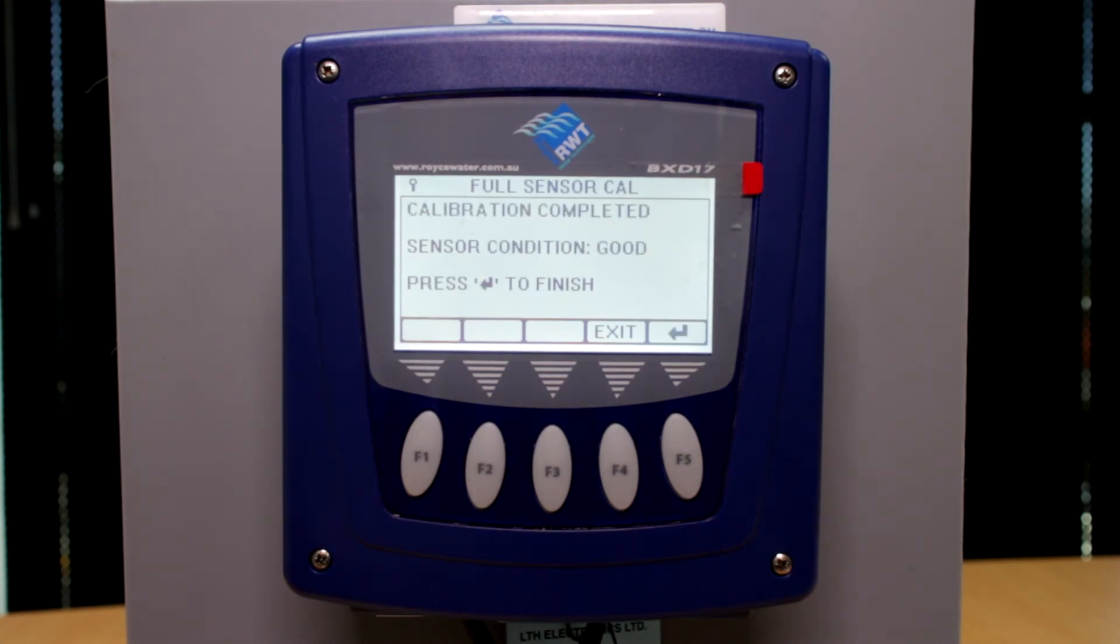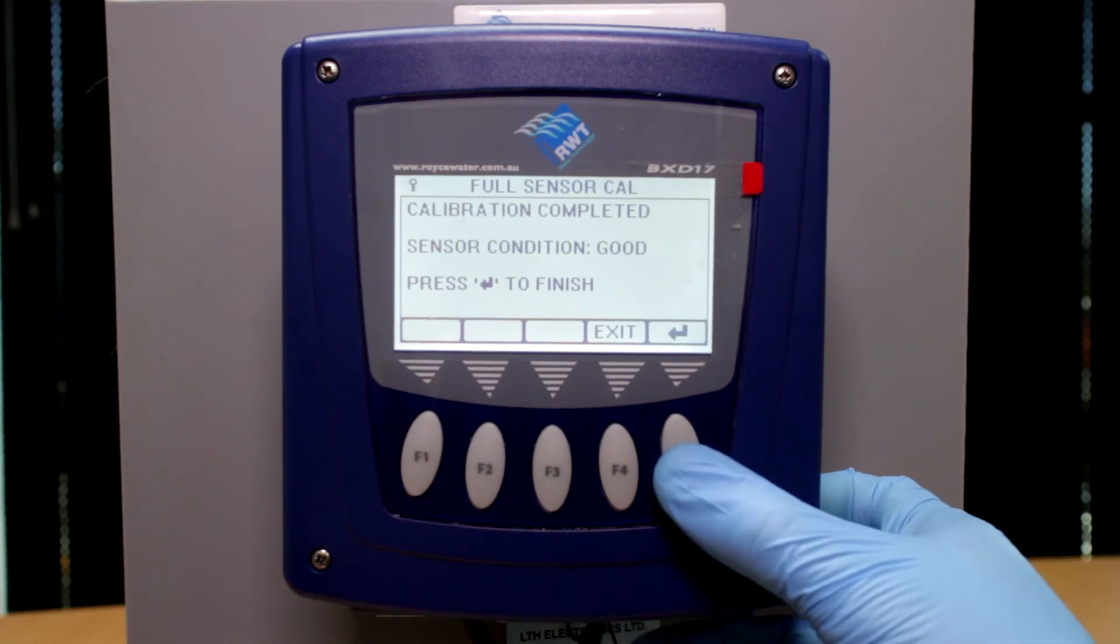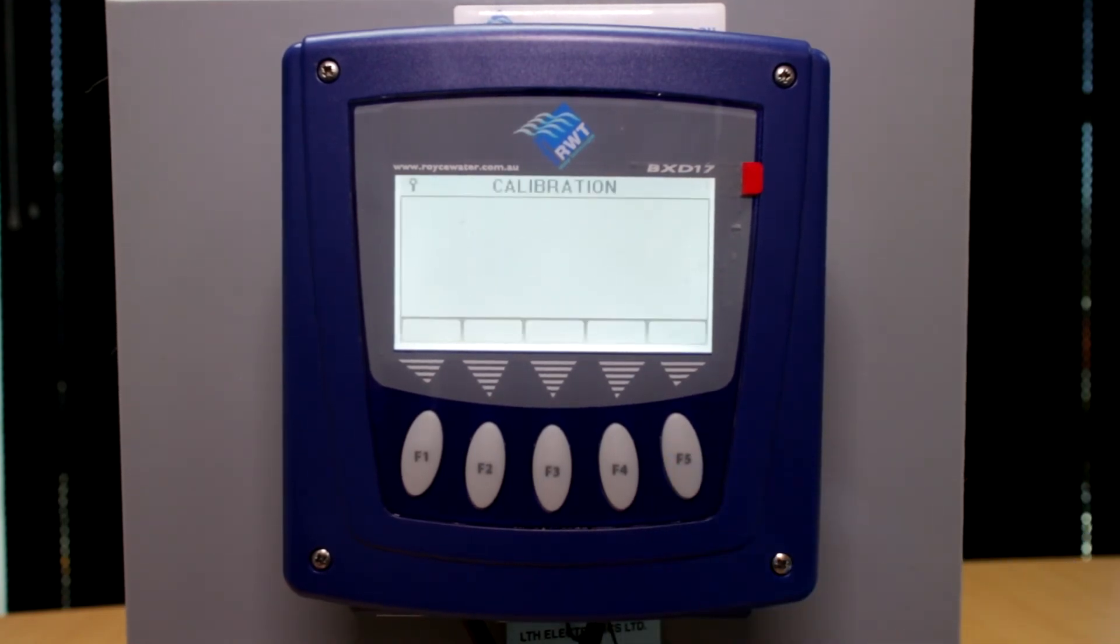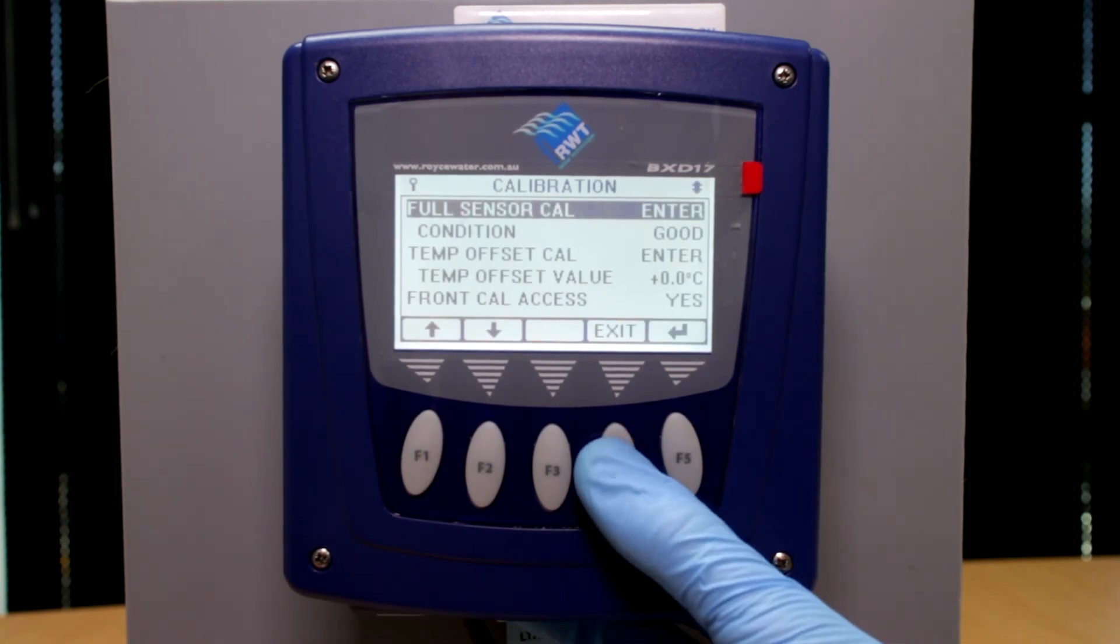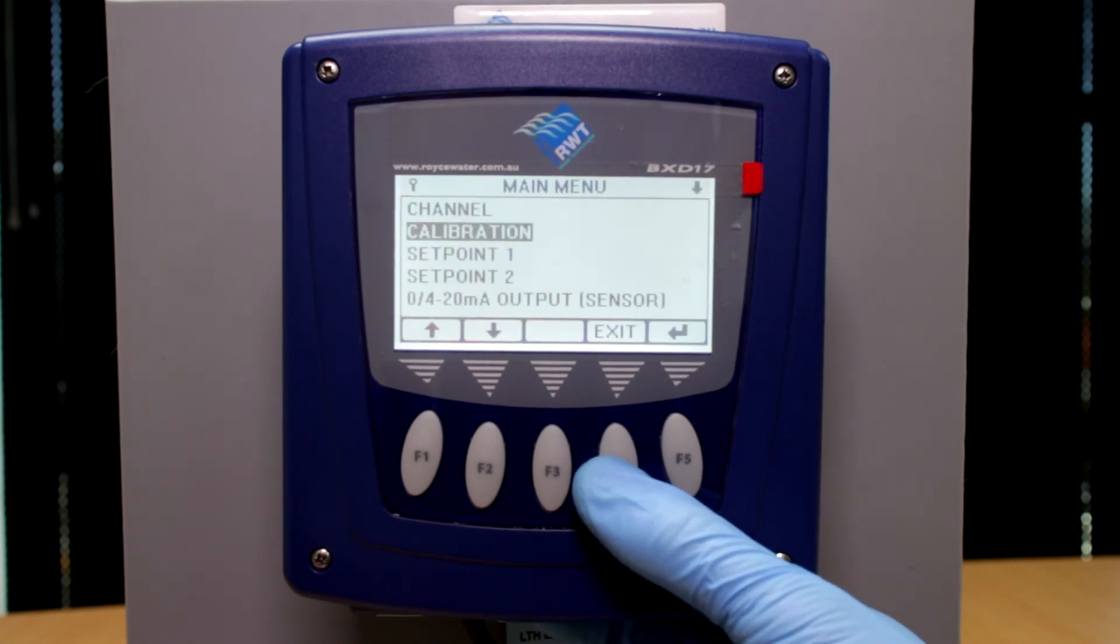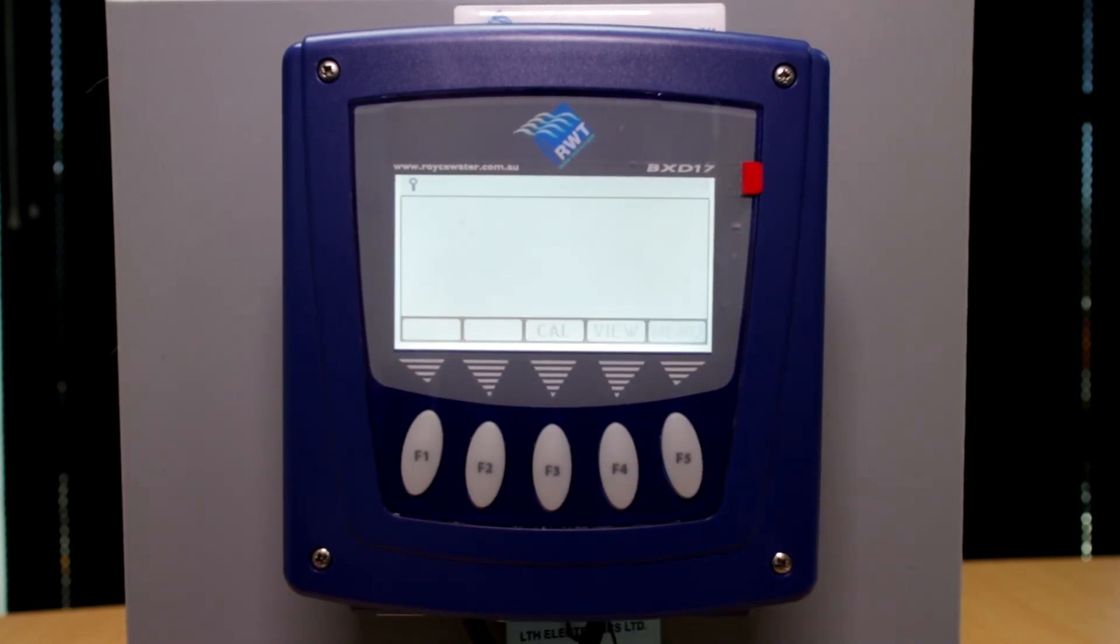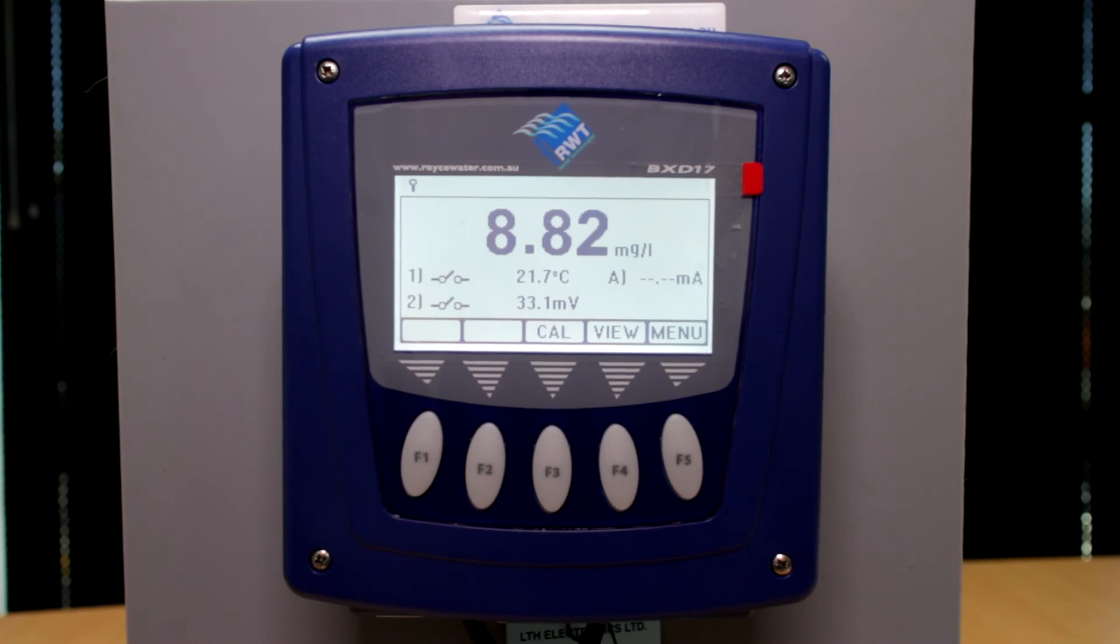Once this has been completed, it will give you a sensor condition and we can push enter. And exit which is F4, and exit again. The sensor is now completely calibrated.